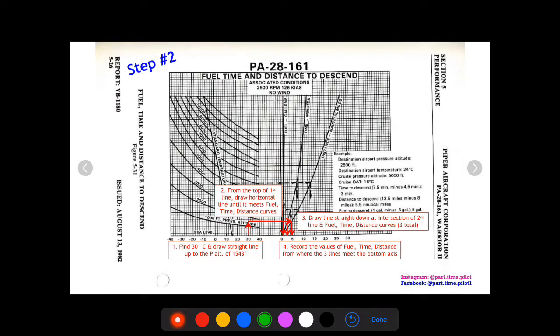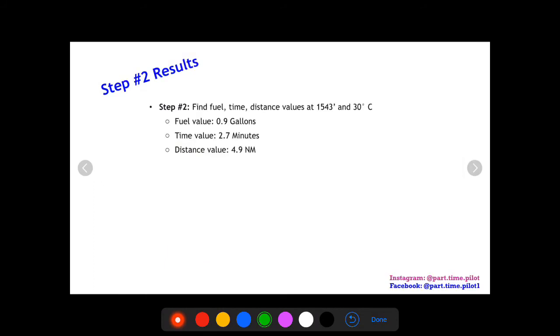Step two, we repeat that process now at our final traffic pattern altitude of 1543. So we use our traffic pattern altitude temperature of 30 degrees, draw a line up to 1543, go horizontal through all three lines, draw lines down from the intersections, and then record all three values. So what do we get? We get fuel of about 0.9, time about 2.7, and distance about 4.9.